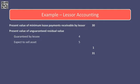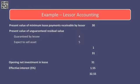At the end of the lease term, the lessee has guaranteed that they will give us 4 in respect of the asset's residual value. However, our expectation is that we would be able to sell the asset for 5, and therefore we have an unguaranteed residual value of 1. This is a further amount of investment. Therefore the net investment in the lease comes to a total of 31, comprising the present value of the minimum lease payments receivable by the lessor and the present value of any unguaranteed residual value.